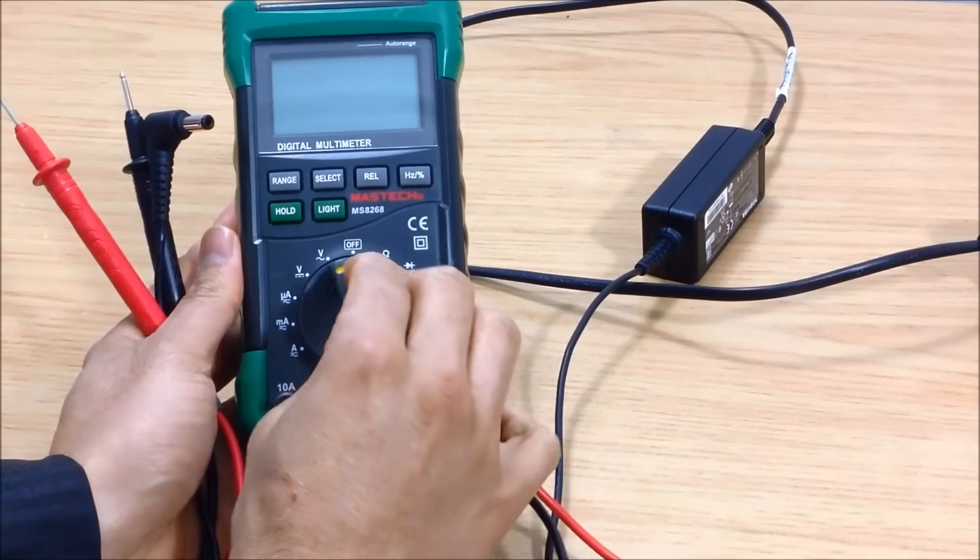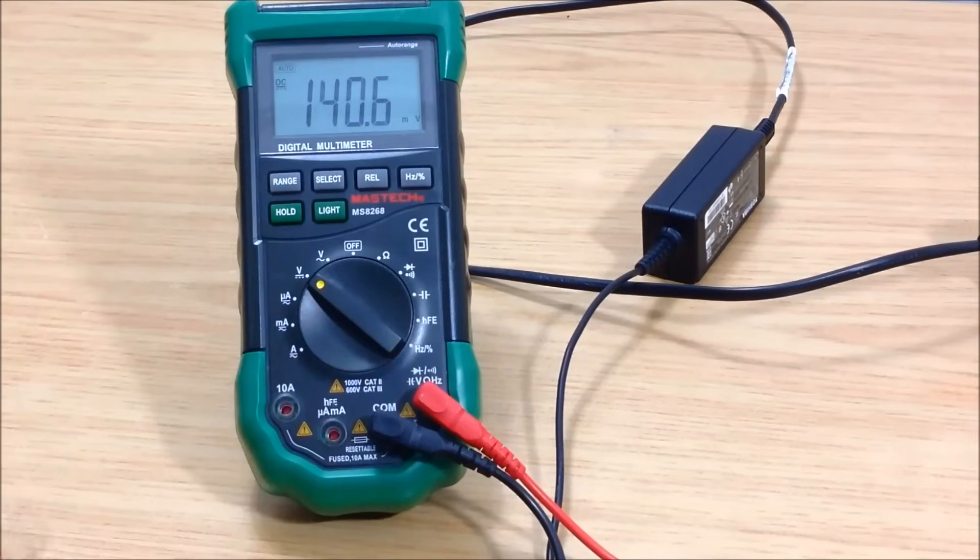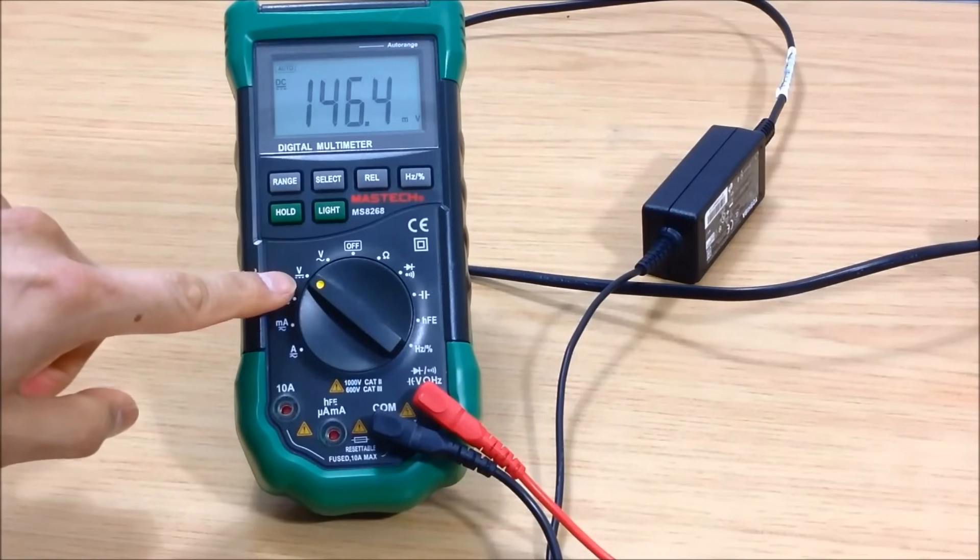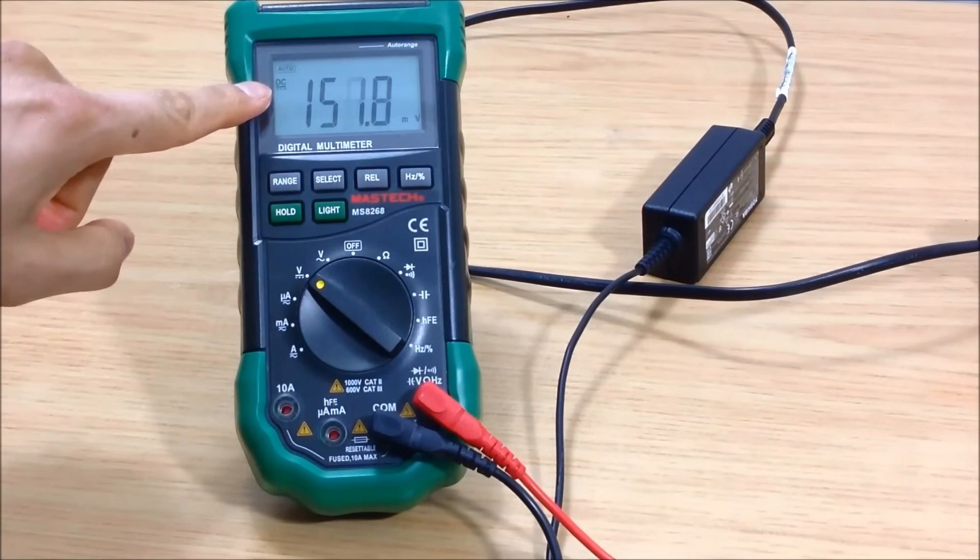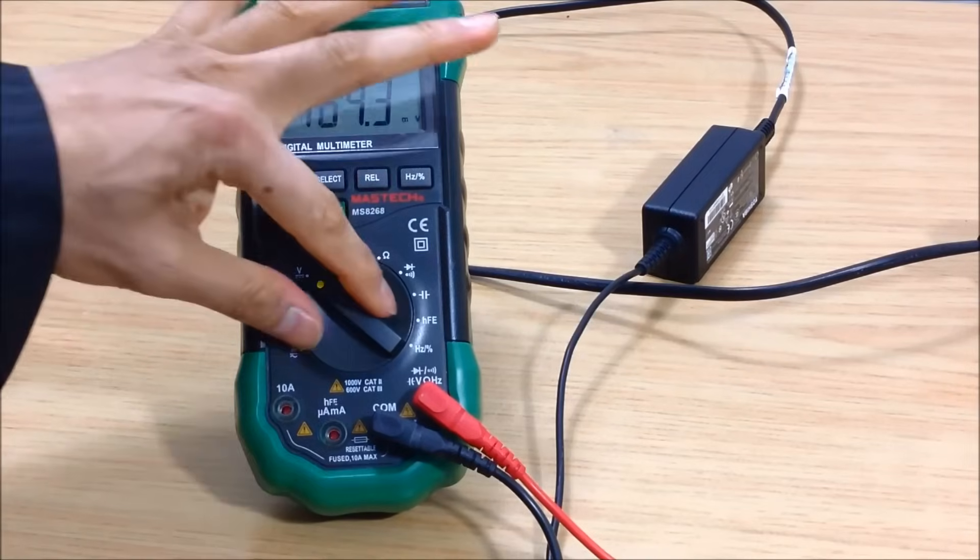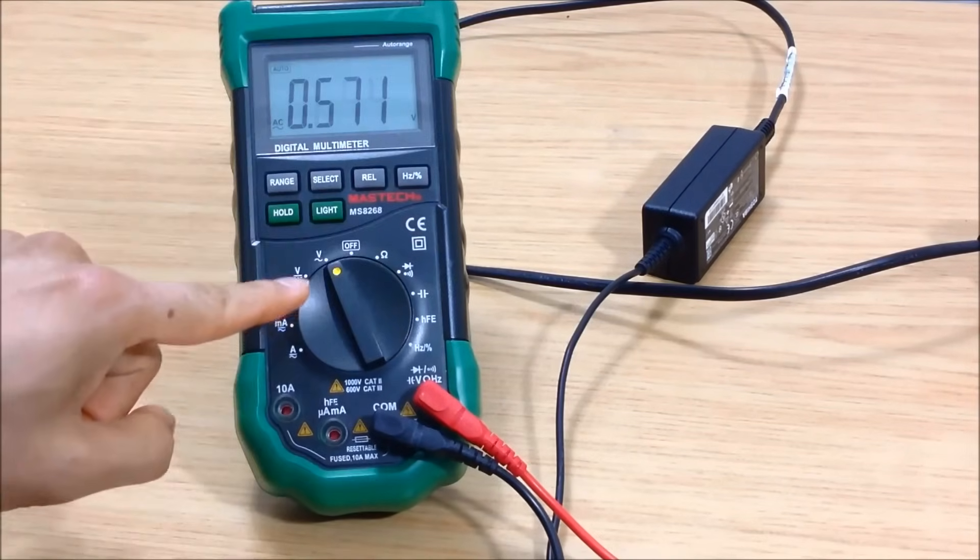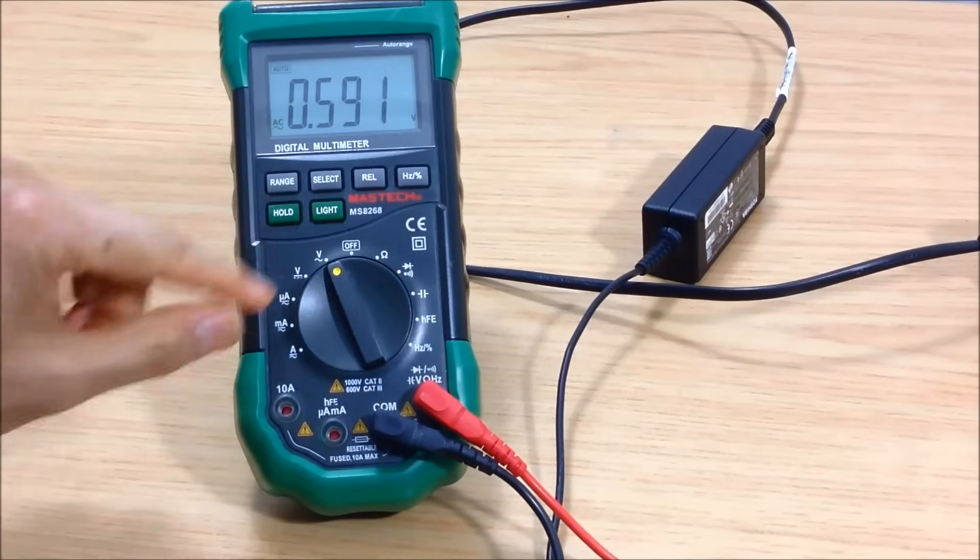Turn the tab to the DC signal. That's this one, the V, and it says DC up here. Hope you can see that. The other one, the V with the squiggly line, that's for AC. You don't want that. You want the DC.